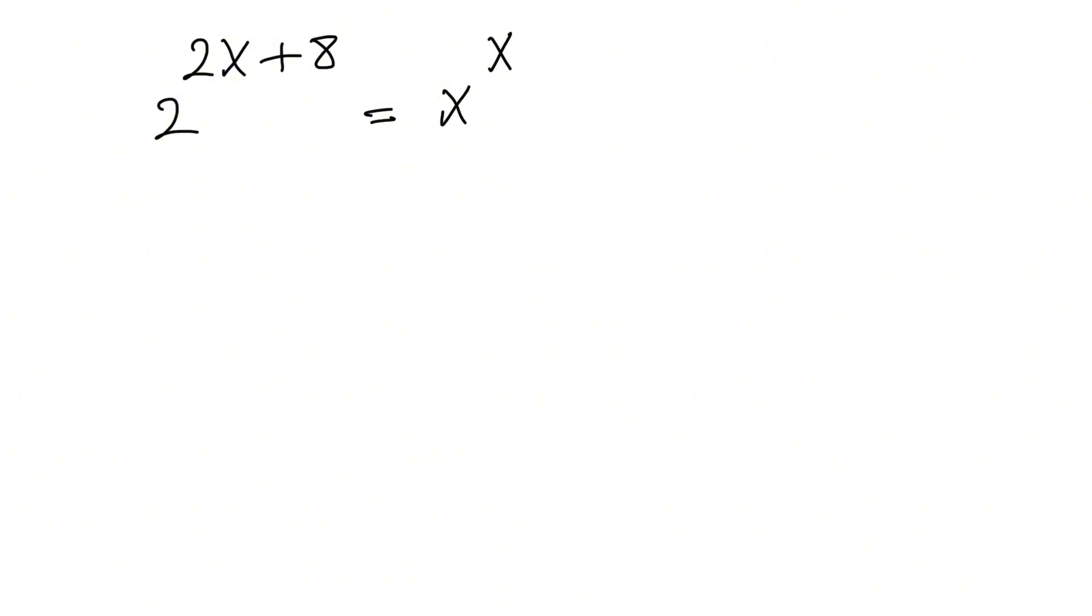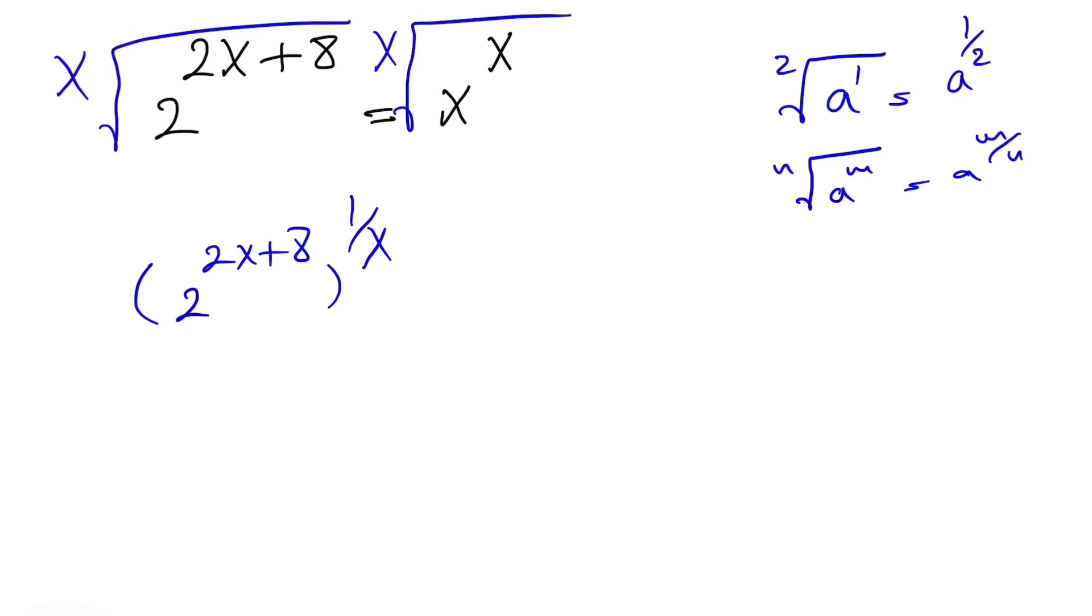What we're going to do is take the x root on each side of this equation. We know that would be 2 to the power of 2x plus 8 to the power of, and if we have a square root of a, this equals a to the power of 1 half. So if we call this m and this n, we will have a to the power of m over n.